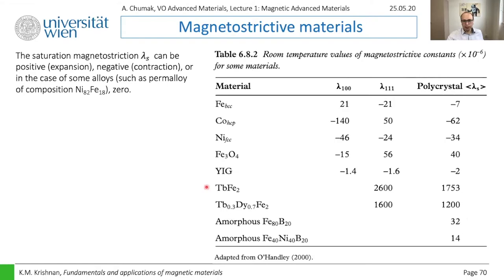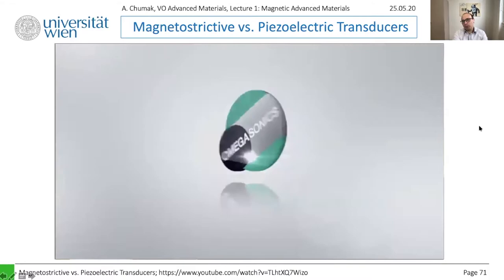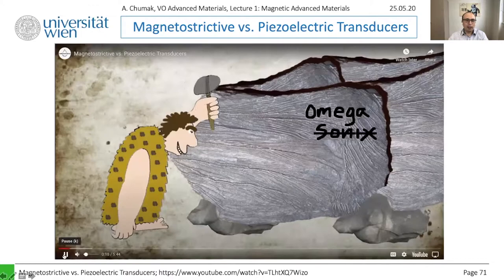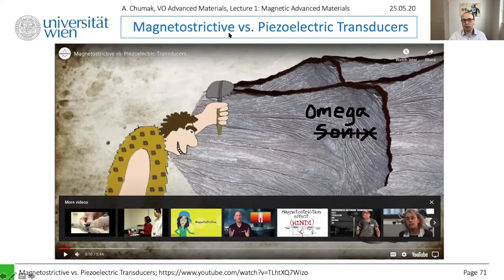It also works for amorphous materials. If you want to use it for applications, there are special materials with very large values of magnetostriction. These magnetostrictive materials can be used to make ultrasonic sources. Ultrasound is used in electric toothbrushes, cleaning baths in clean rooms, and some washing machines. This video discusses how magnetostrictive materials can be used for ultrasound generation compared with piezoelectric transducers.